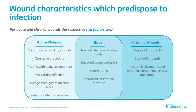There are some characteristics which cross over on both acute and chronic wounds, such as haematoma, increased exudate, or sloughy necrotic tissue sitting in a wound bed — all of which can really predispose somebody to an increased risk of wound infection.